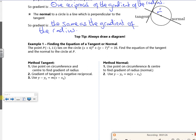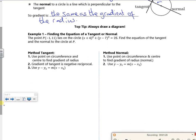It says top tips always draw a picture. Well you know I always draw pictures anyway. Right, so let's have a look at this. I'm actually going to do finding the normal first because that's easier since that is using the radius. So the point P is (-1, 11), lies on the circle there. Find the equation of the tangent and the normal.